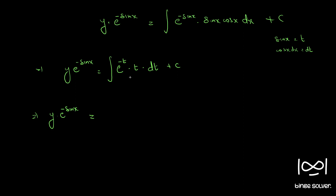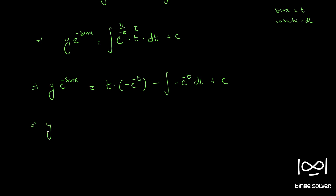We use integration by parts: t is the first function and e raised to minus t is the second function. First function times integral of second function gives minus t·e raised to minus t, minus the integral of the differential of the first function (which is 1) times minus e raised to minus t dt, plus C.